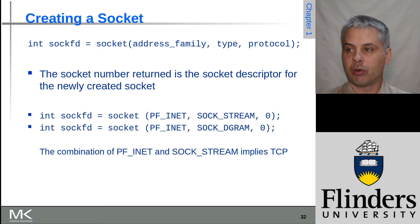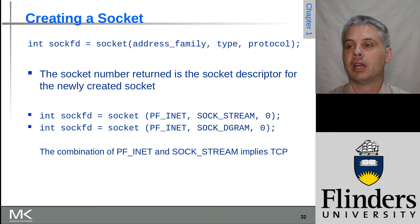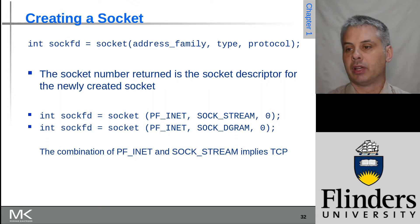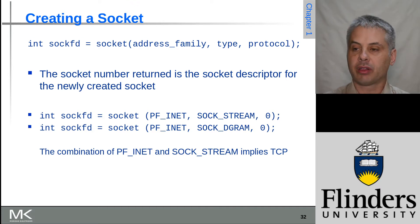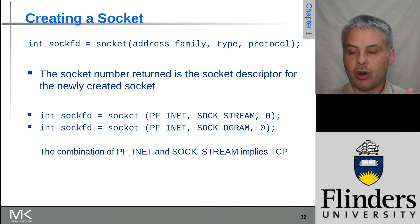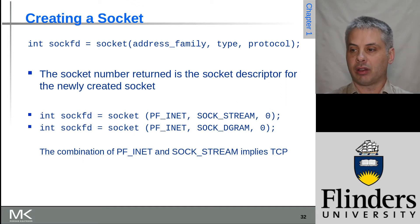Ordinarily you can just leave the protocol field empty and allow the system to automatically detect the correct protocol, and then you specify the address family and the socket type. Some operating systems use PF underscore and others use AF underscore before the inet part. Each combination of an address family and socket type will normally map to a specific protocol — for example, inet and stream will get you TCP, and inet and dgram will get you UDP.